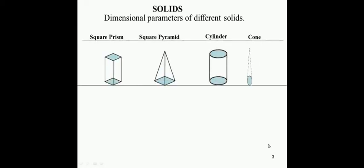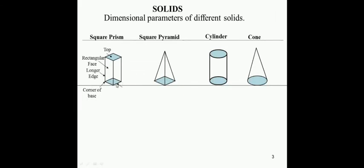Now we will see the dimensional parameters of different solids. Consider four types: square prism, square pyramid, cylinder, and cone. For the square prism, this is the top surface, this is the rectangular face, this is the longer edge, this is the corner of the base, and this is the edge of the base.